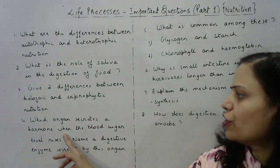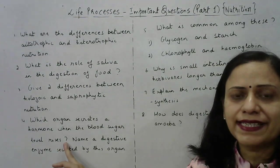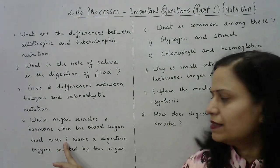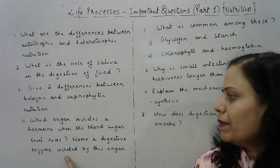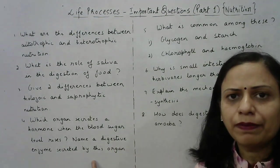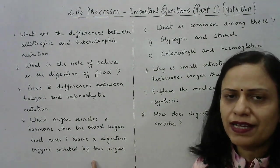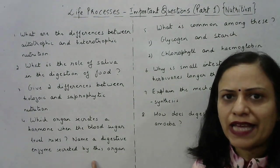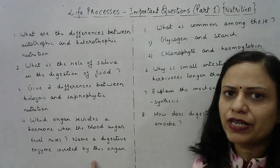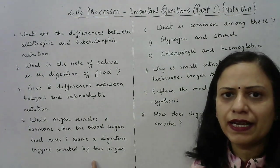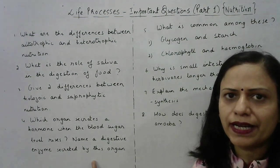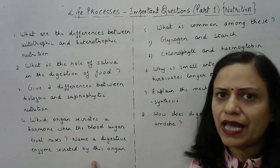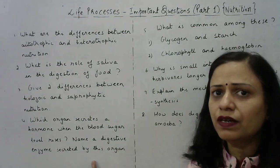Which organ secretes a hormone when blood sugar level rises? The answer is pancreas. You also have to name a digestive enzyme secreted by this organ. There are three enzymes secreted by the pancreas — you can mention any one: trypsin, pancreatic amylase, or pancreatic lipase. Any one of the three can be mentioned here along with its function.